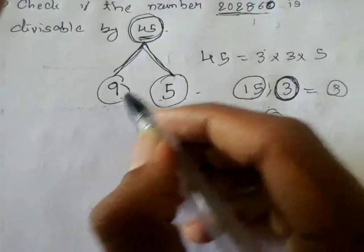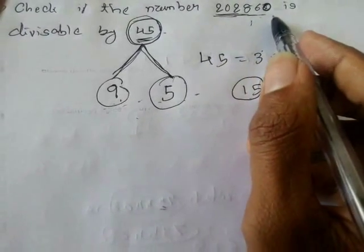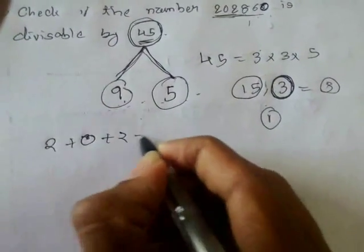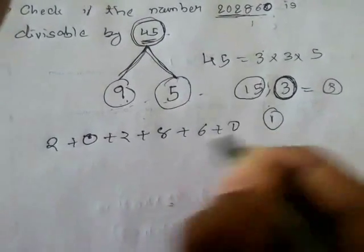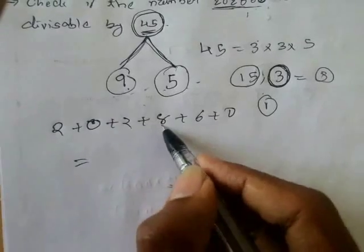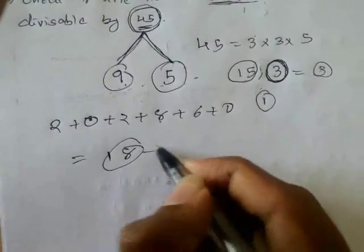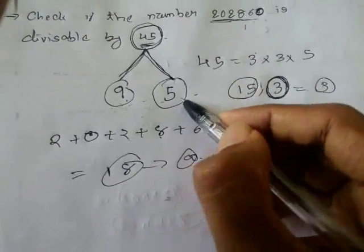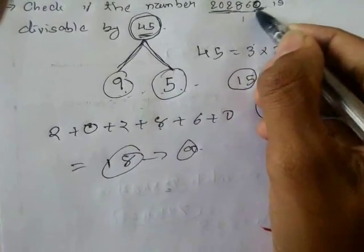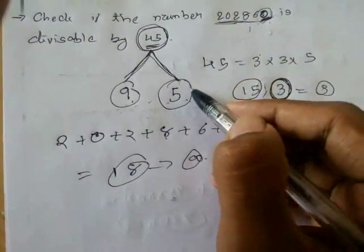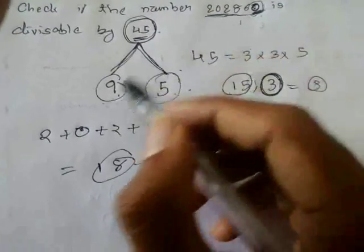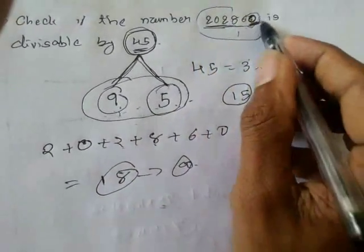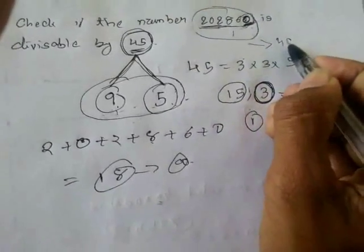To check divisibility by 9: the sum of digits 2 plus 0 plus 2 plus 8 plus 6 plus 0 gives us 18, and 18 is divisible by 9. To check divisibility by 5: the unit's place is 0, so the number is also divisible by 5. Since it's divisible by both 9 and 5, the number is divisible by 45.